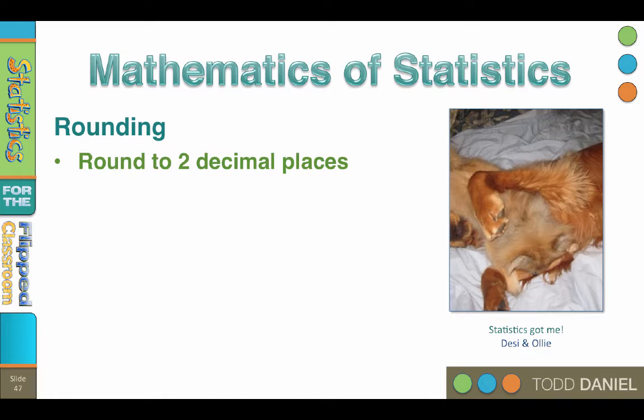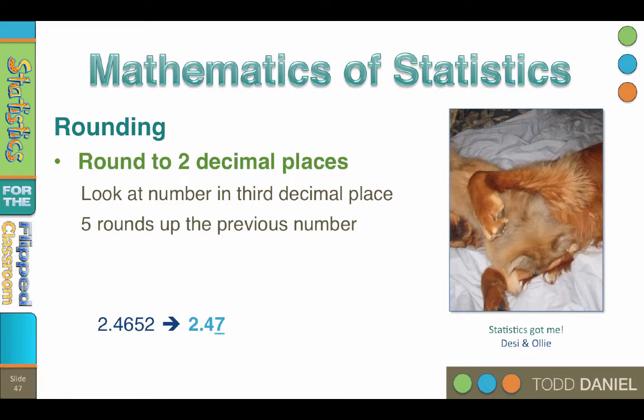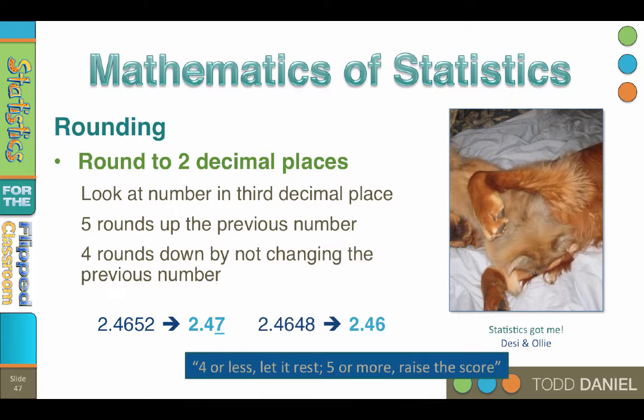Our general rule will be to round to two decimal points for a final answer. The rules for rounding are five rounds up and four rounds down. What you should do is look at the number in the third decimal place. If the number in the third decimal place is five or greater, round up the number in the second decimal place by adding one to it. If the number in the third decimal place is four or less, round down by not changing the number in the second decimal place. And you only do this rounding at the end. Be cautious about rounding during your calculations because rounding introduces error. So round at the last step.